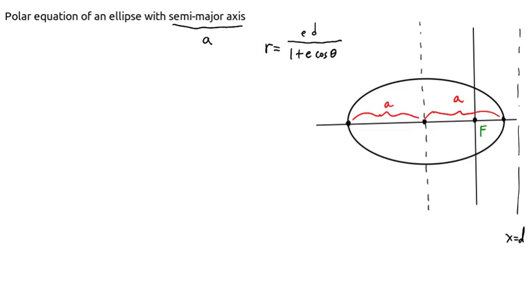And what we're asked to do is rewrite the polar equation of the ellipse in terms of the semi-major axis a and e. So instead of d, let's get d out of there. And what we can do is use two of the very important points. This point right here lies on the ellipse, and that corresponds to an angle of theta equals 0.